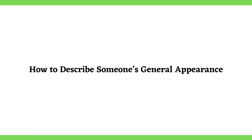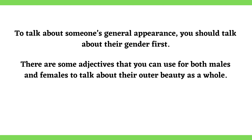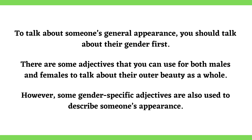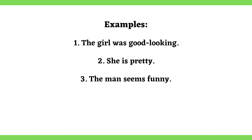How to describe someone's general appearance: To talk about someone's general appearance, you should talk about their gender first. There are some adjectives that you can use for both males and females to talk about their outer beauty as a whole. However, some gender-specific adjectives are also used. Examples: The girl was good-looking. She is pretty. The man seems funny. She looks gorgeous.